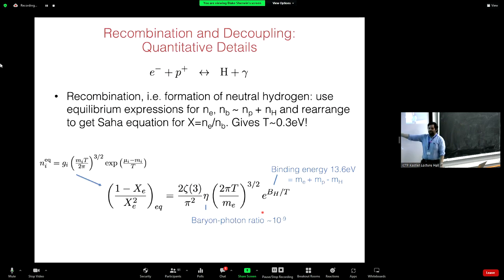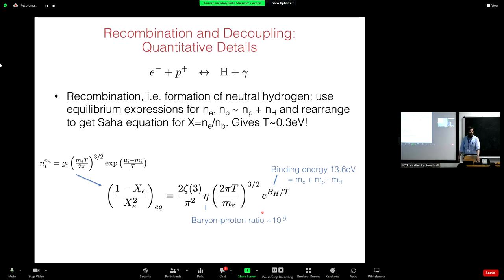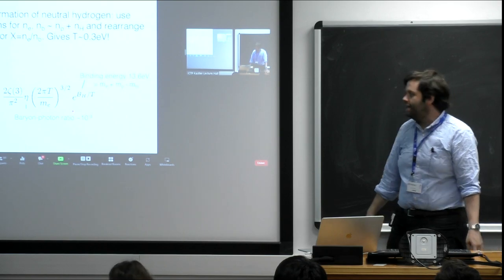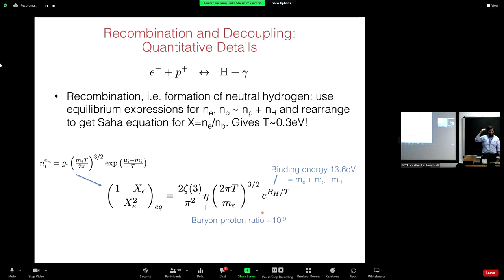You can solve this to find when the universe recombines — when does the ionization fraction become really low? Naively you'd think recombination happens at a temperature of 13.6 eV (the binding energy of hydrogen), but instead it gives 0.3 eV. The reason is the tail of the Planck distribution — there are so many photons that even those rare, exceptionally high energy photons in the tail are enough to ionize hydrogen and keep it ionized until the temperature drops way below 13.6 eV. The baryon-to-photon ratio is 10^{-9}.